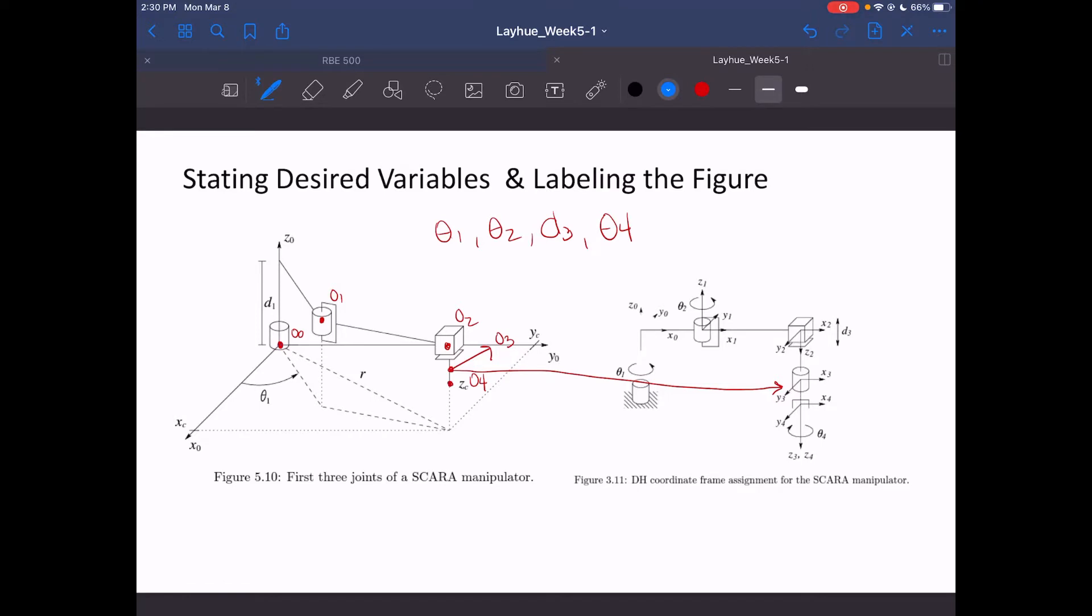So now that we have our frames, I can designate our desired variables as well as our link lengths. So here we can designate a1, a2, and now we worry about our joint variables. One thing to note, we have theta1 that's already assigned to us, and that describes the rotation of frame 0 that affects frame 1.